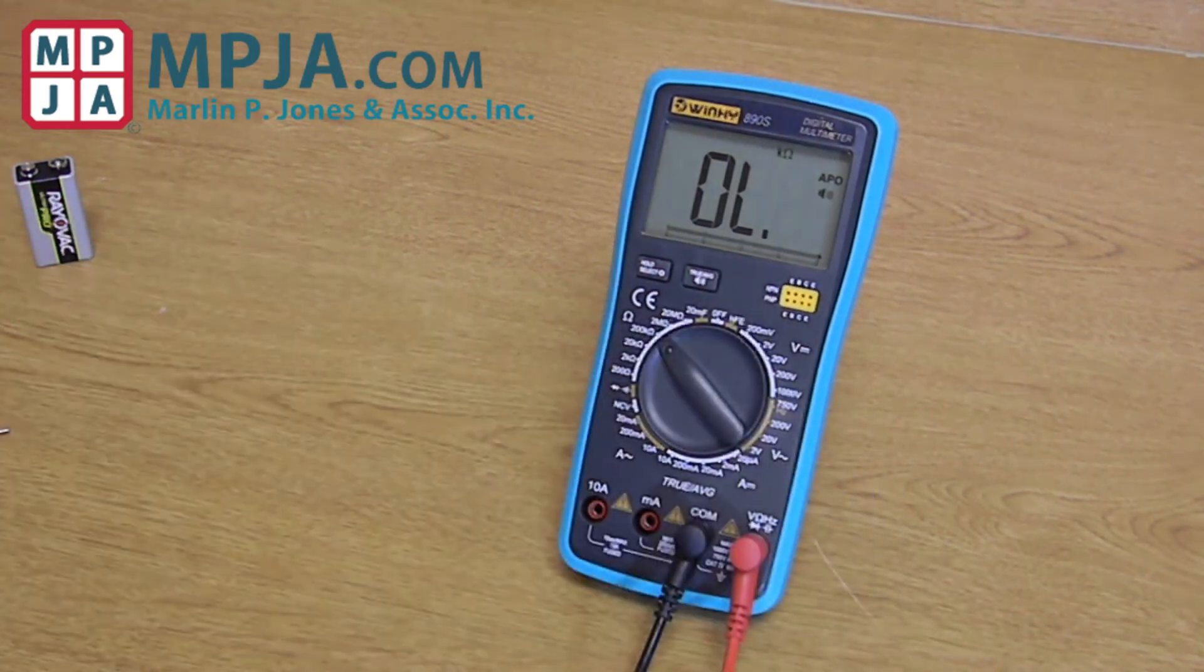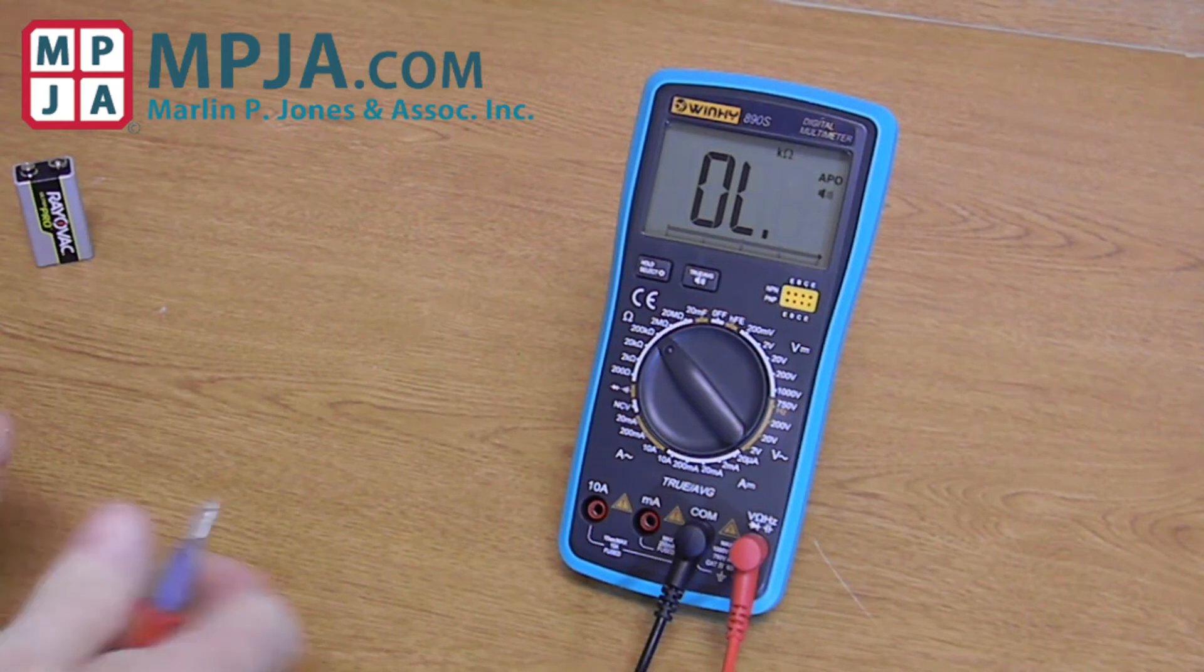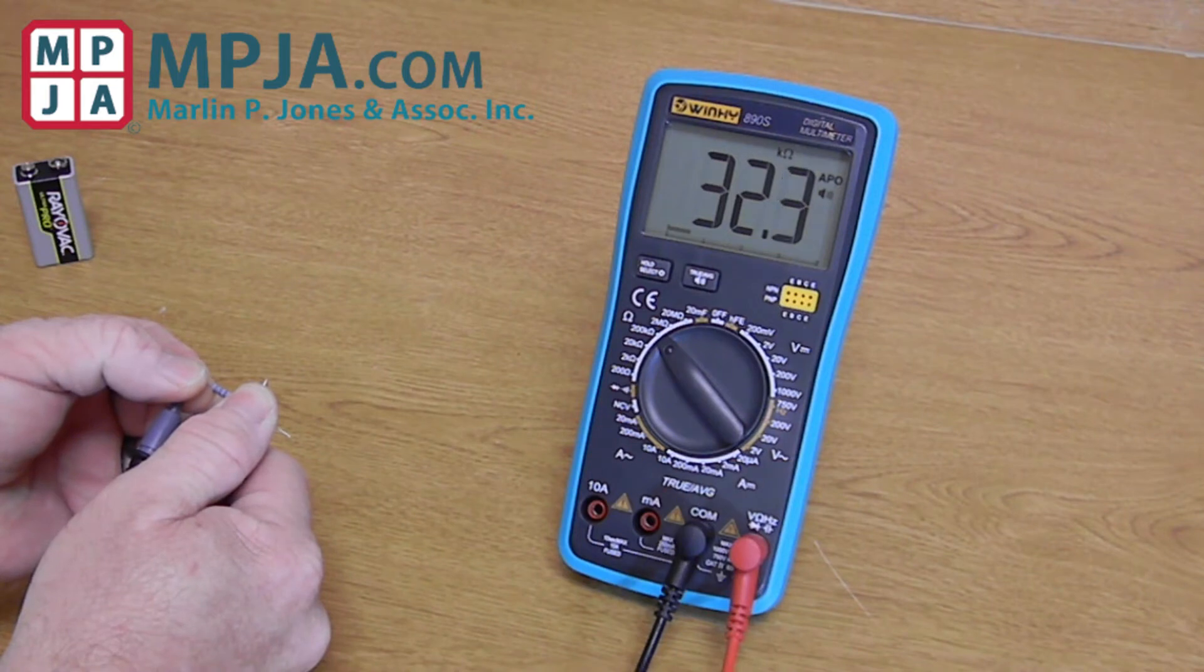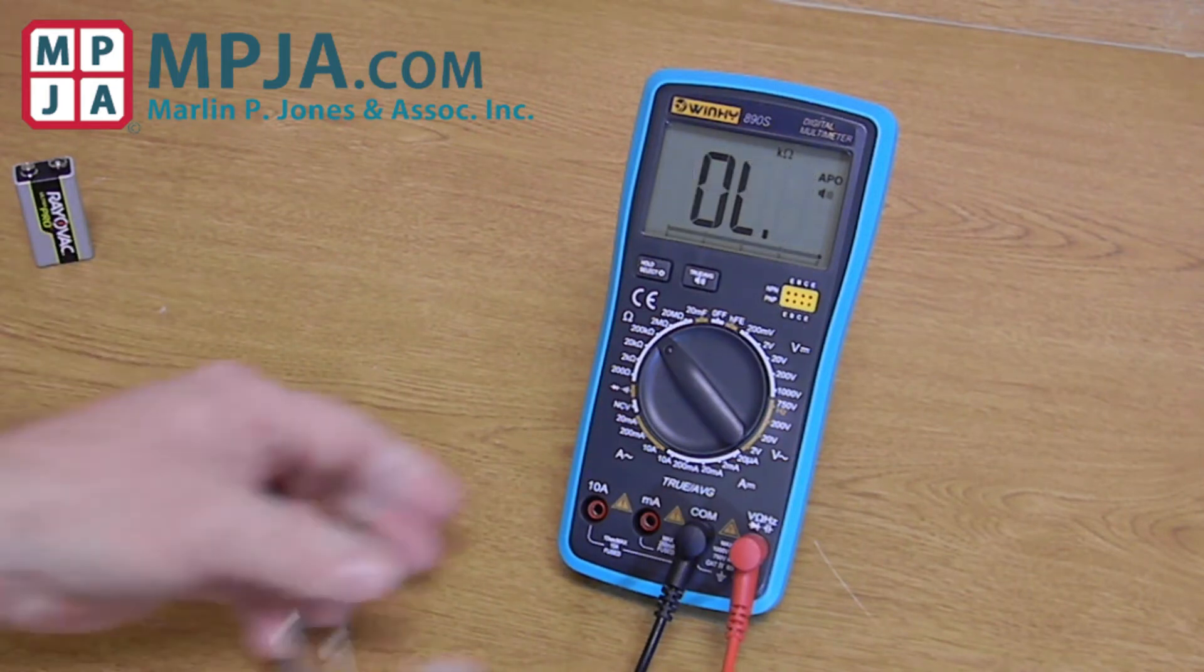Okay, then we go up. I have a 33k ohm resistor. 32.7,000 ohm. Super range.